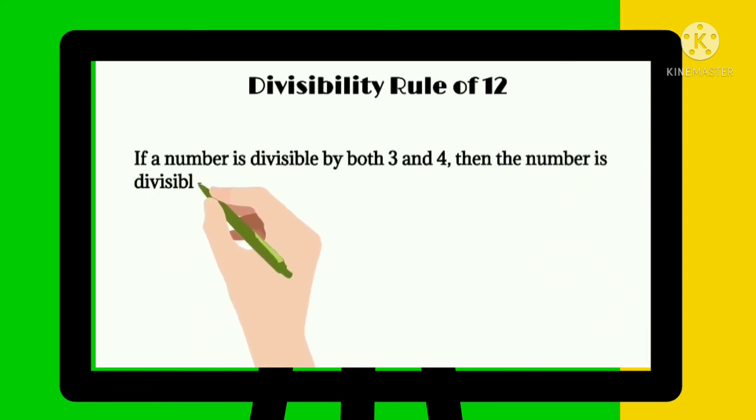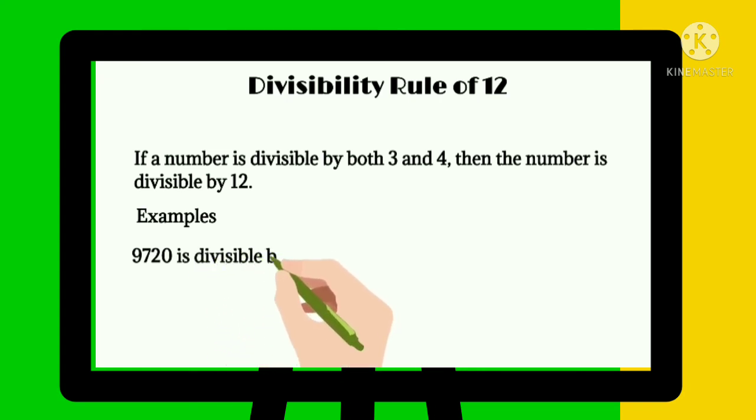For example, 9,720 is divisible by both 3 and 4. Therefore, 9,720 is divisible by 12.